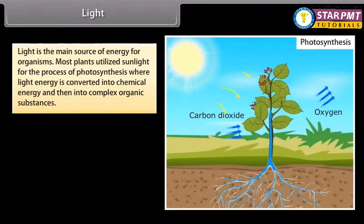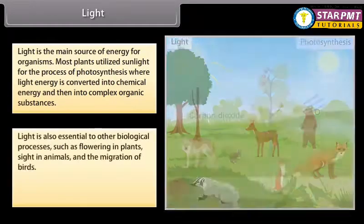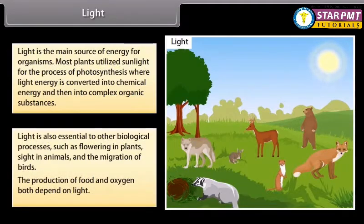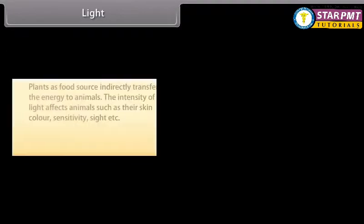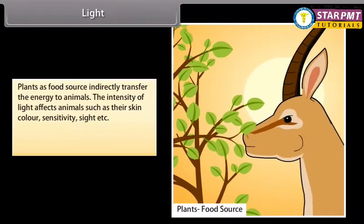Light is the main source of energy for organisms. Most plants utilize sunlight for the process of photosynthesis, where light energy is converted into chemical energy and then into complex organic substances. Light is also essential to other biological processes such as flowering in plants, sight in animals, and the migration of birds. The production of food and oxygen both depend on light. Plants as food sources indirectly transfer energy to animals, and the intensity of light affects animals such as their skin color, sensitivity, and sight.